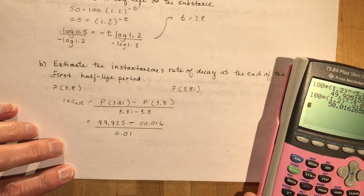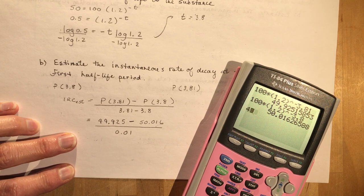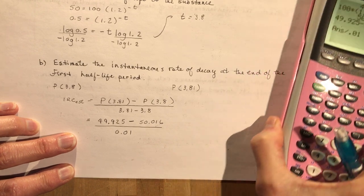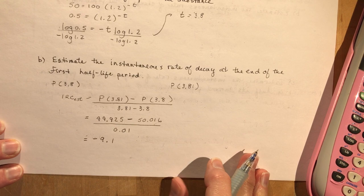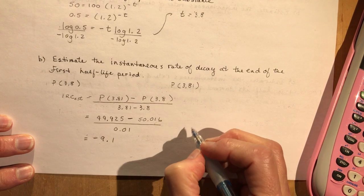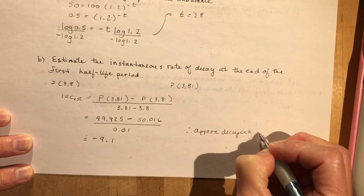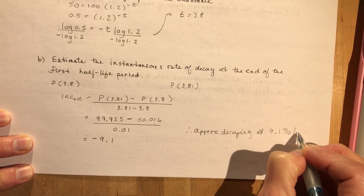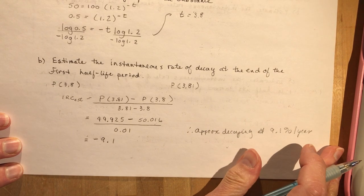So there we have our calculations for 3.81 and 3.8. I'm dividing by 0.01. So I'm going to do 49.925 minus 50.016, divided by 0.01, and I get minus 9.1. So it's decaying — you're not going to say decaying negatively, you're going to say it's decaying at 9.1 percent per year. Approximately decaying at 9.1 percent per year. You could say it's changing at negative 9.1 percent per year if you want to do it that way.